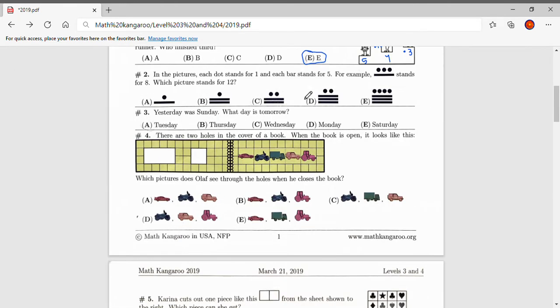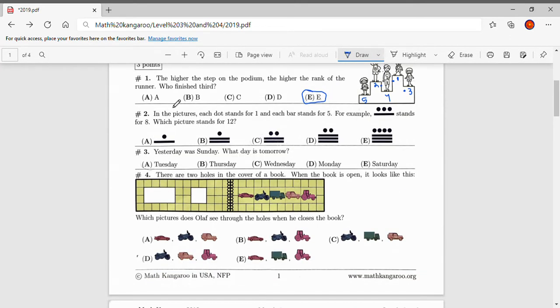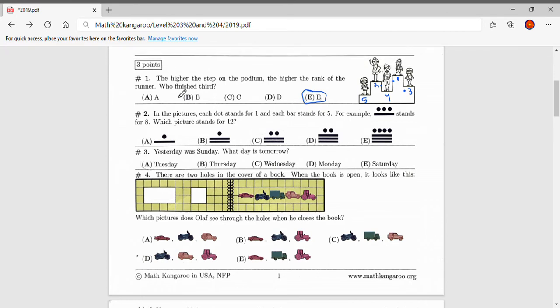Number two. In the pictures, each dot stands for one and each bar stands for five. For example, this stands for eight. Which picture stands for 12? So if each bar stands for five, that means that 12 will consist of two bars. Five plus five equaling 10.